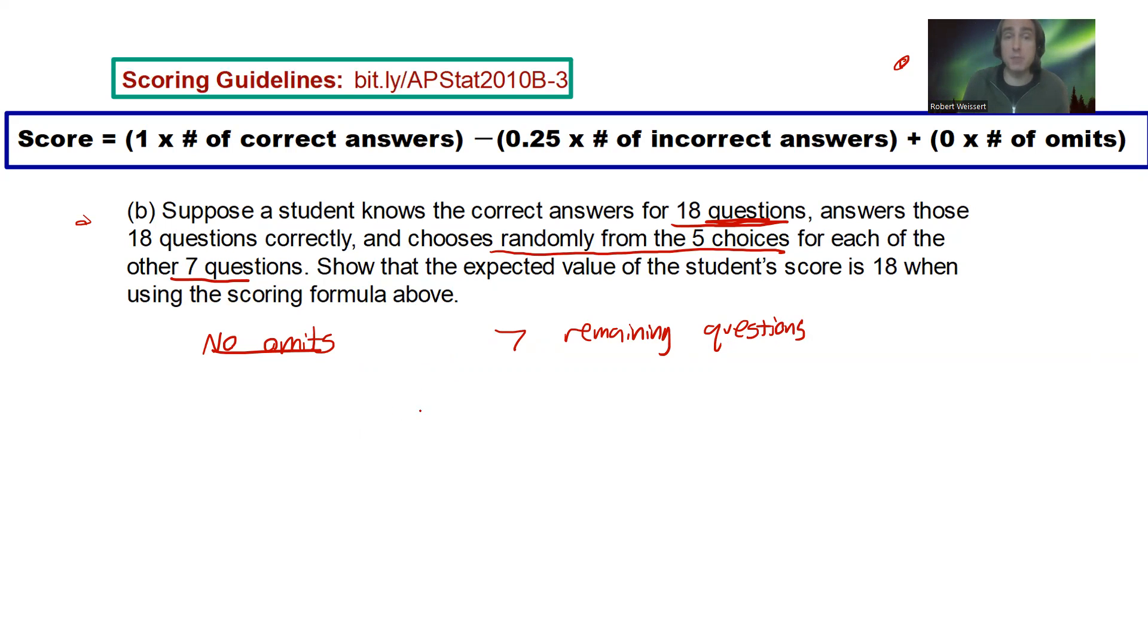Students are going to randomly pick from the five choices for each of those seven questions, right? So, the expected value for those five questions, or for those seven questions, the expected value for just those seven questions is going to be, well, it's going to be one-fifth, or 0.2, times seven, right? We got seven questions remaining times 0.2, or times one-fifth. Multiply those together. What do you get?